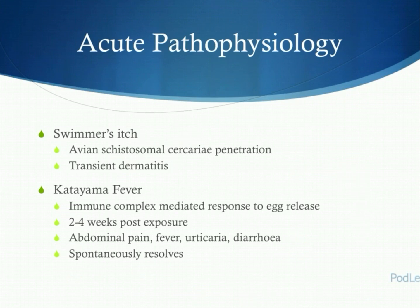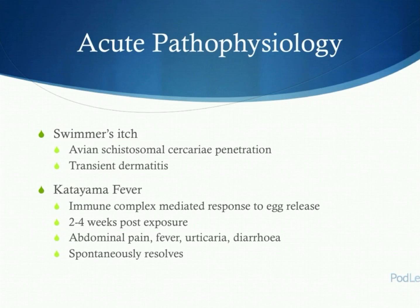If a human comes into contact with an avian species — not one of the five previously mentioned — a transient dermatitis, known as swimmer's itch, can occur, and this usually spontaneously resolves. The other acute presentation is Katayama fever, which is an immune complex-mediated response to the initial ova release. This occurs about two to four weeks post-exposure and results in non-specific symptoms of abdominal pain, fever, urticaria, and diarrhoea. It's usually found in people who don't live in endemic regions, such as travellers or backpackers, and normally spontaneously resolves without treatment within a few weeks.